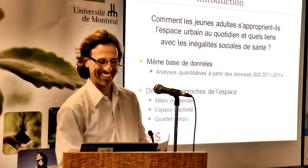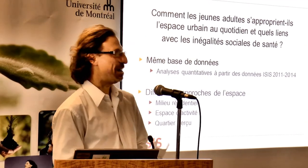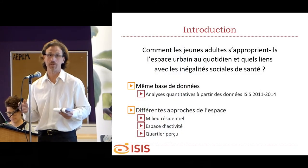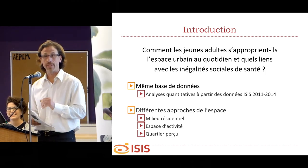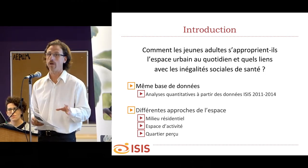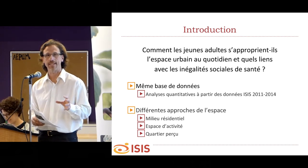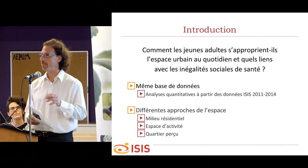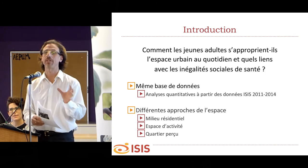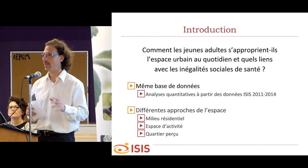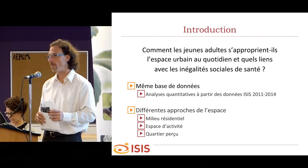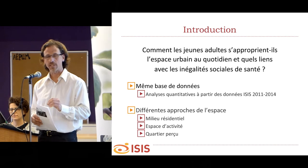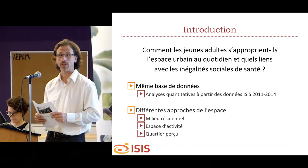Good afternoon again. As was said, we'll now move into space and young adults and their relationship with social inequality and health. You'll see three different sets of analysis today — all quantitative analysis based on ISIS data collected from 2011 to 2014. We have different approaches because there's no one way to go about this question. I will start with an approach centered around residential environments, then we'll move to activity spaces with Martin, and then to perceived neighborhoods with Julie.